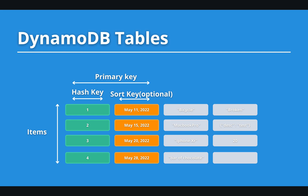The primary key uniquely identifies an item inside the table, meaning no other item can have the same primary key. To have a valid primary key, only the hash key part is required — we can omit the sort key. The types of the hash key and sort key are set at the time of table creation and cannot be changed during the lifetime of the DynamoDB table.